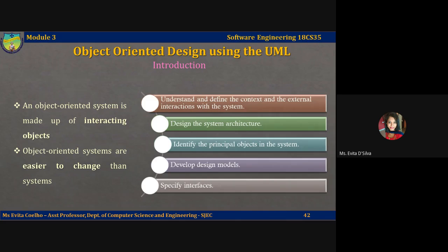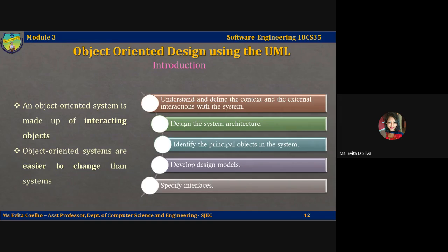Let's now look at object-oriented design using UML. An object-oriented system is made up of interacting objects that maintain their own state and behavior — they have their own set of values to attributes and they define the operations that can be invoked on them. The representation of the state is private and hence an object cannot be directly accessed. Object-oriented design process involves designing classes and the relationship between these classes. These classes will then define the objects in the system and how they interact with each other. Object-oriented systems are easier to change than systems developed using functional approaches.